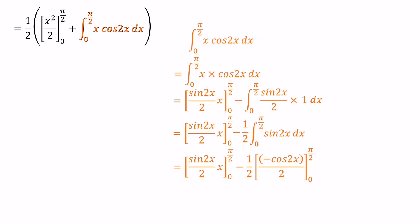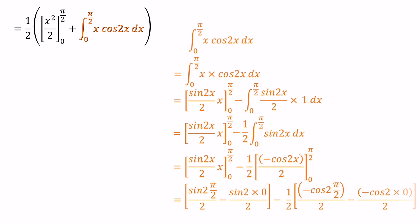Finally, we need to substitute the upper and lower limits. First: sin 2x over 2 times x, evaluated from upper limit pi over 2 minus lower limit 0. Second: minus cos 2x over 2, evaluated from upper limit pi over 2 minus lower limit 0. Then we have sin pi over 2 minus sin 0 over 2, minus half times within bracket minus cos pi over 2 minus cos pi over 2 minus cos 0 over 2.